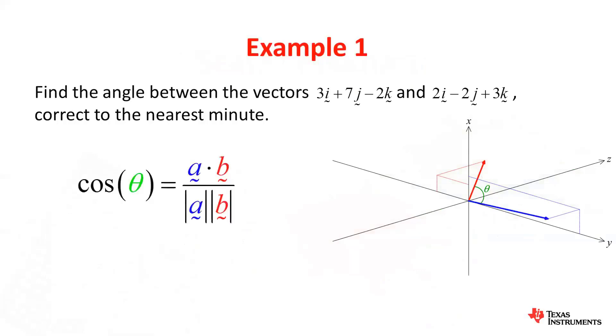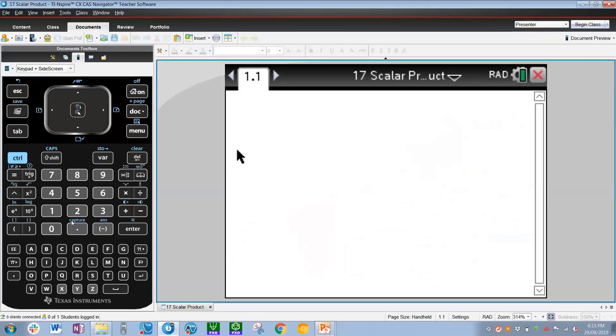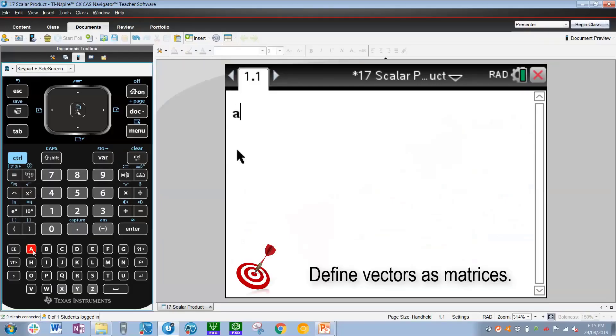So to find the angle between two vectors, use the formula cos(θ) = a·b / |a||b|, as shown here, as well as in the diagram there.